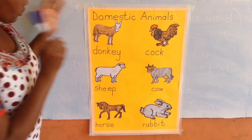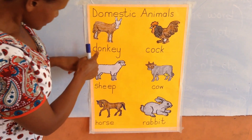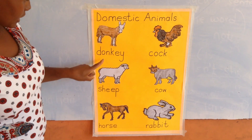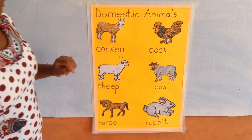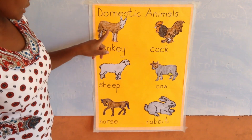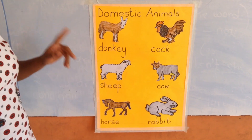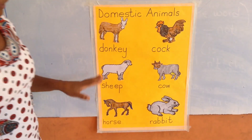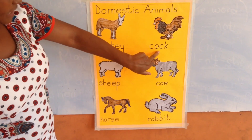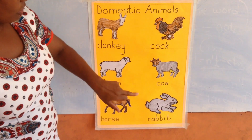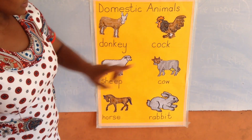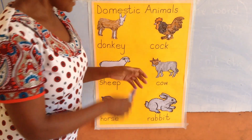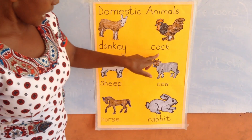My number one domestic animal is donkey. Donkey is an animal that we keep at home. I know some of you have seen a donkey. If you have not seen, you can tell your mommy or your daddy to show you a donkey. The next animal is the cock. Cock is a male animal. We have the hen and the cock, but mine is a cock.